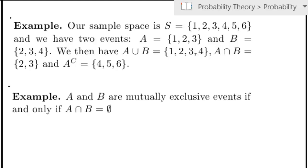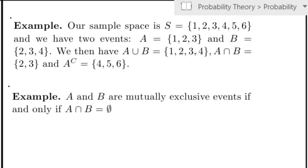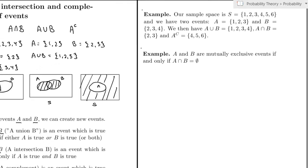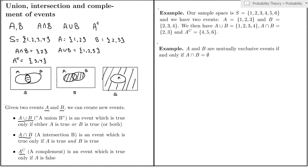Remember that two events are mutually exclusive if they cannot happen at the same time. Well, that basically means that the event A intersection B, that is the event that they do both happen at the same time, must be the null event, which cannot happen.